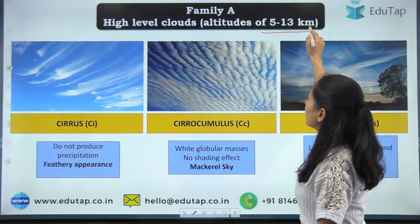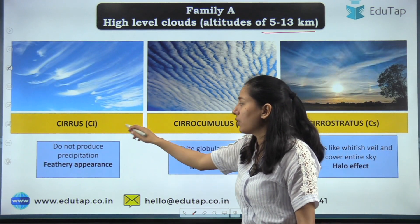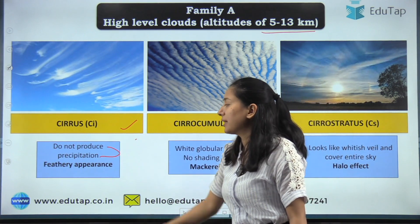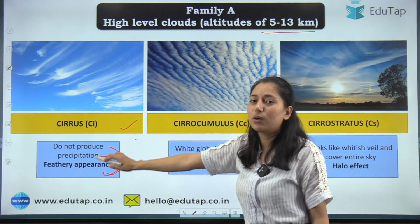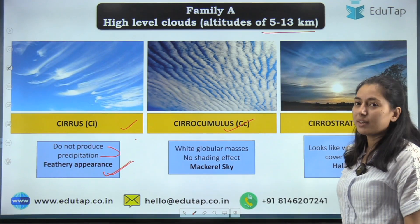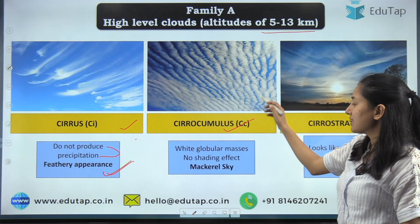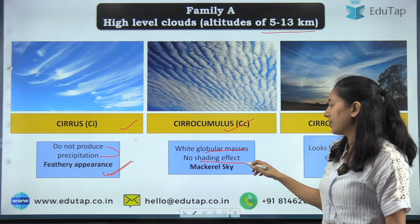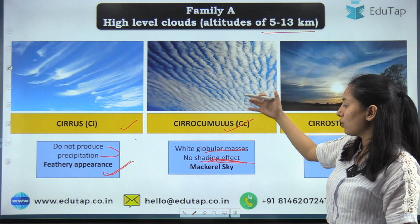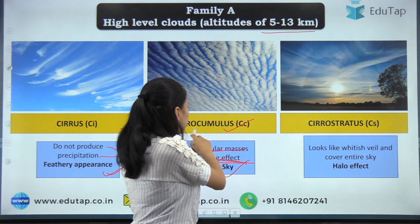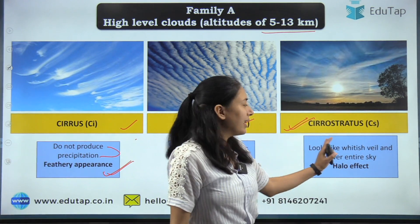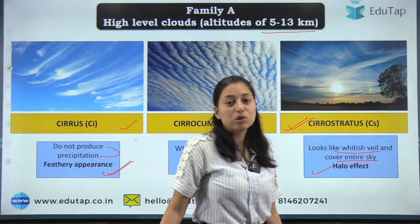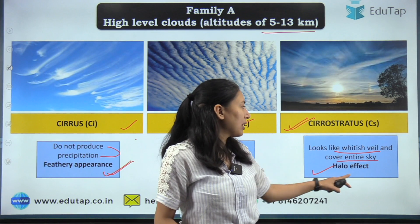First, Family A — altitude 5 to 13 kilometers. The first type is cirrus: these do not produce precipitation and are feathery in appearance. Next is cirrocumulus: these are wide globular masses with no shading effect; when cirrocumulus appears, the sky is also known as mackerel sky. Then cirrostratus: it looks like a whitish veil covering the entire sky and produces a halo effect.